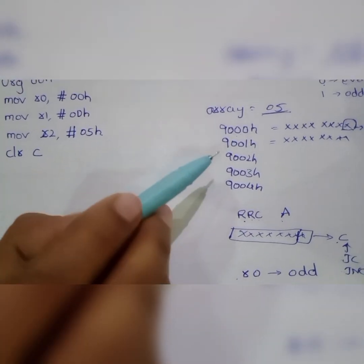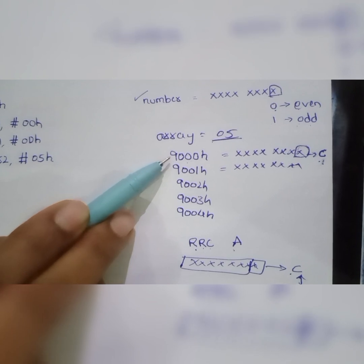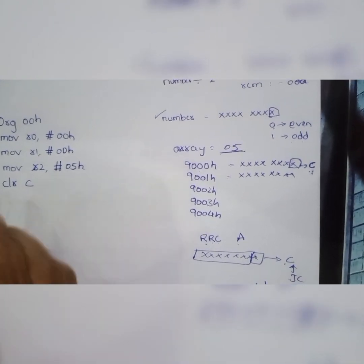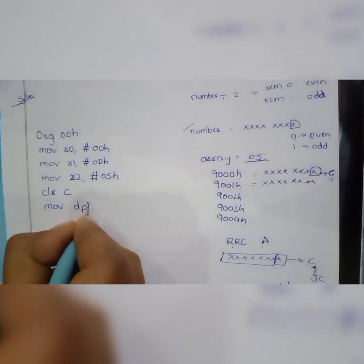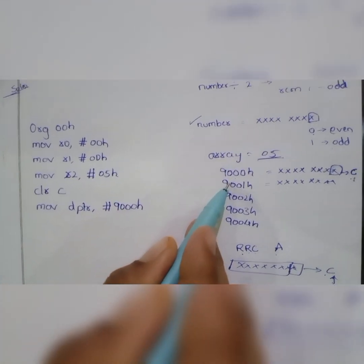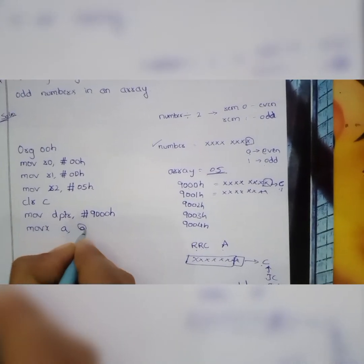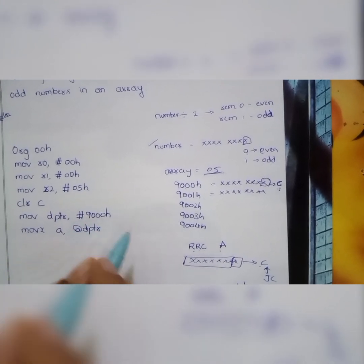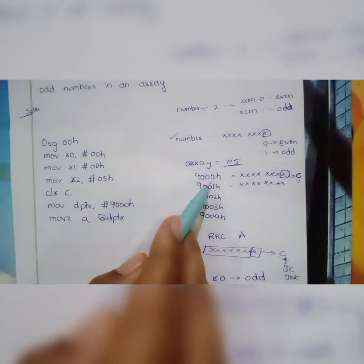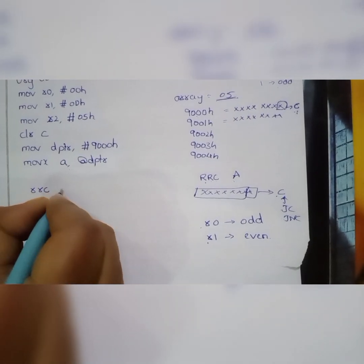Since the array starts from memory location 9000H, we store this initial address in DPTR, as it is an external memory address: MOV DPTR, #9000H. We are copying 9000H, the initial address of the array, into DPTR. Now we take the data present in the first memory location into register A: MOVX A, @DPTR. DPTR is holding 9000H, so whatever data is present at 9000H is now copied into A. Then we execute RRC A to rotate the accumulator right through carry.